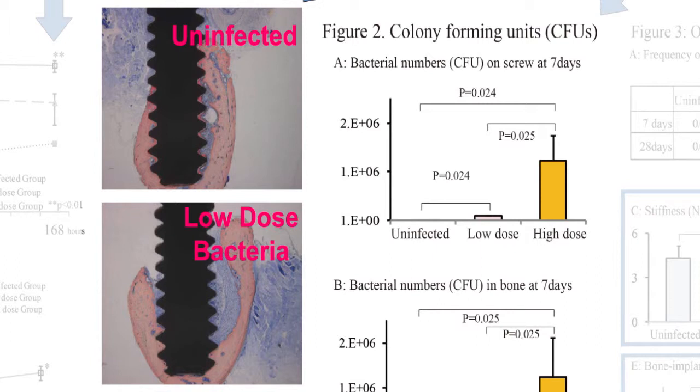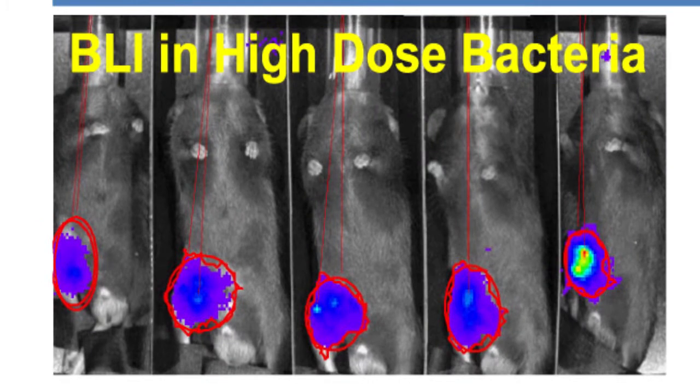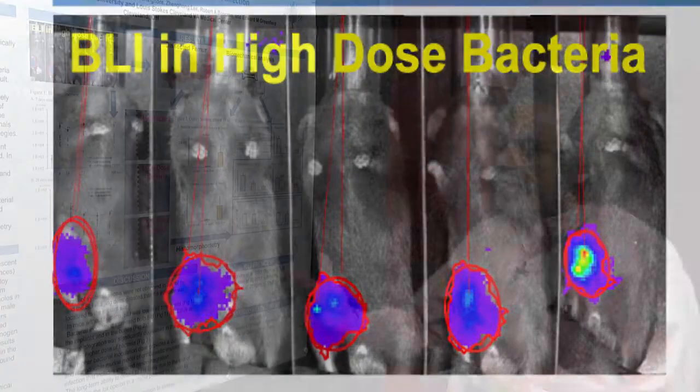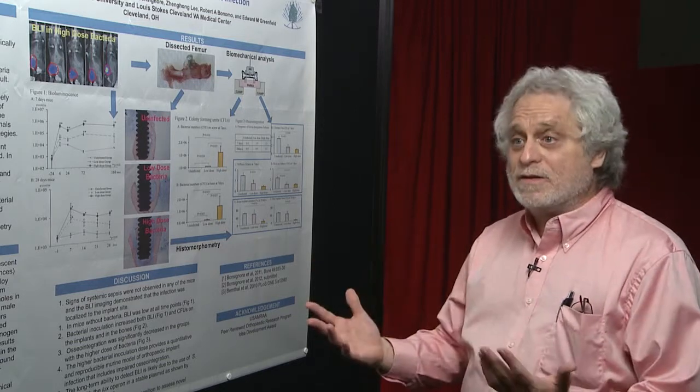What's really been the huge benefit is these bioluminescent bacteria, which initially we weren't planning on using. The advantage of this strain is the bioluminescent gene is stably incorporated so it stays in the bacteria.